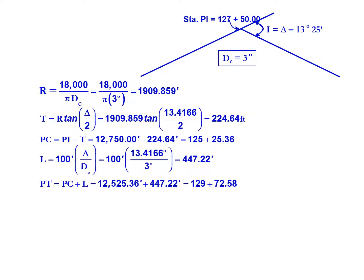Now we can calculate the station of our point of tangency, the PT, by adding this length to our PC station. So we'll have station of our PC 125 plus 25.36, or in feet 12,525.36 feet, plus 447.22 feet for our length will give us a PT station of 129 plus 72.58.